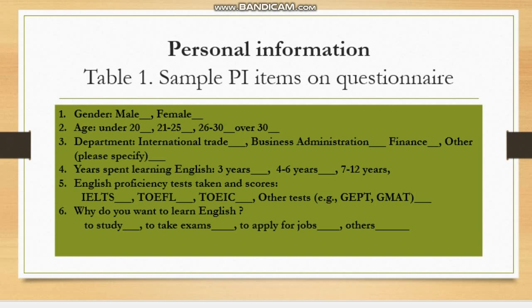Here you can see an example of a personal information questionnaire. You can see fields for gender, age, department, years spent learning English, English proficiency test taken and scores, and why you want to learn English — to study or to take exams. Candidates and learners have to complete the table for further professional development.